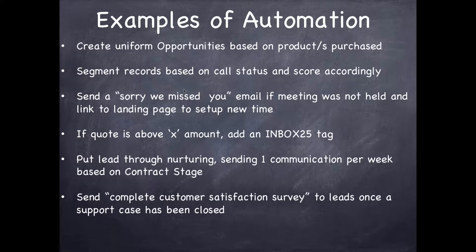Using meetings as a condition — if a meeting was not held, maybe you want to send an email apologizing to the prospect for missing the meeting and linking a landing page in the email for them to fill out when they're next available to meet with you. Using quotes, if a quote is above $50,000, maybe you want to add a tag of 'high-value quote' to the record. And for contracts, if a contract is in a specific negotiation stage, you can put the record into a content stream, sending them one email a week for four weeks, apprising them of the facets of the contract they're in negotiation with, as well as bringing in some brand awareness about the company.